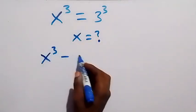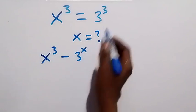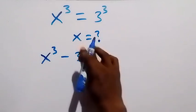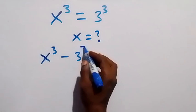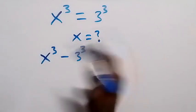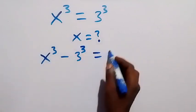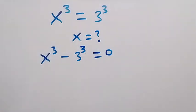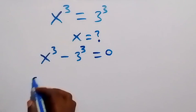x³ minus 3³. Why don't we take 3³ here? Sorry please, this is 3³. So x³ minus 3³ now equals to 0. Then from here when we apply the difference of two cubes,